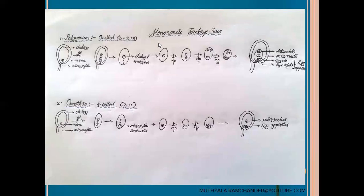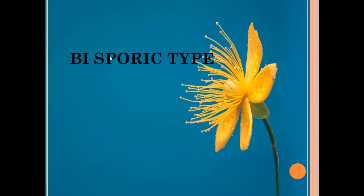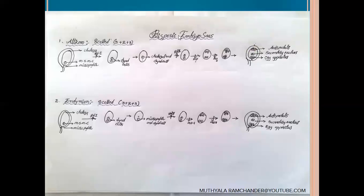These two embryosacs — polygonum and enothera — belong to monosporic type. The next type is bisporic embryosac. Bisporic type means the embryosac is developed from two megaspores. Bisporic type is also of two types: one is allium and the second is endemion. Allium type contains eight cells at the mature stage arranged in a three plus two plus three arrangement, and endemion also contains eight cells arranged similarly.